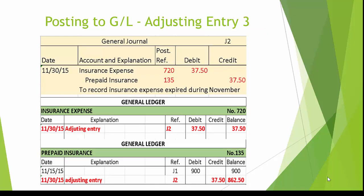Here is adjusting entry number 3, which records insurance expense expired during November. Again, the debit to insurance expense is entered in the general ledger account number 720, and the balance after posting in the ledger is $37.50 debit. The credit to prepaid insurance is entered in the credit column of the general ledger account number 135, bringing the new balance in prepaid insurance to $862.50 debit.